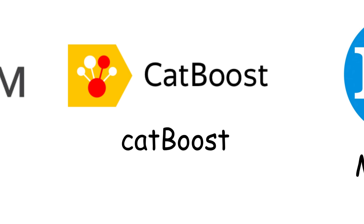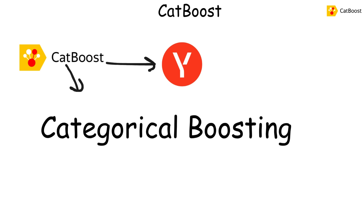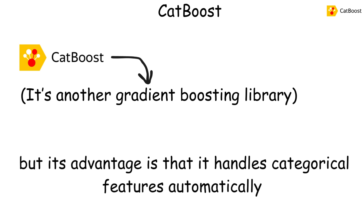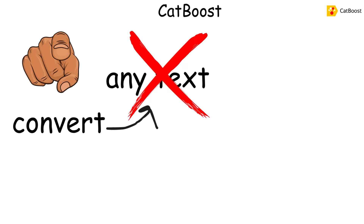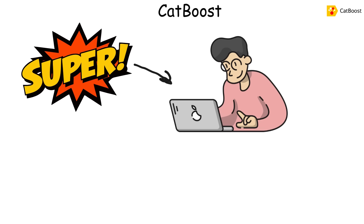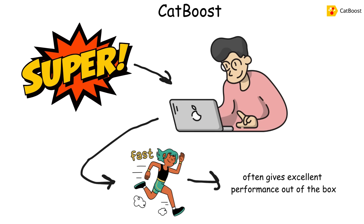CatBoost, developed by Yandex, stands for Categorical Boosting. It's another gradient-boosting library, but its advantage is that it handles categorical features automatically — you don't need to convert text or labels into numbers manually. It's super easy to use, fast, and often gives excellent performance out of the box.